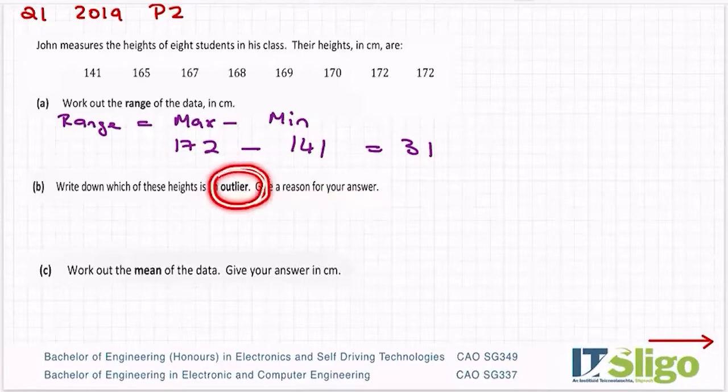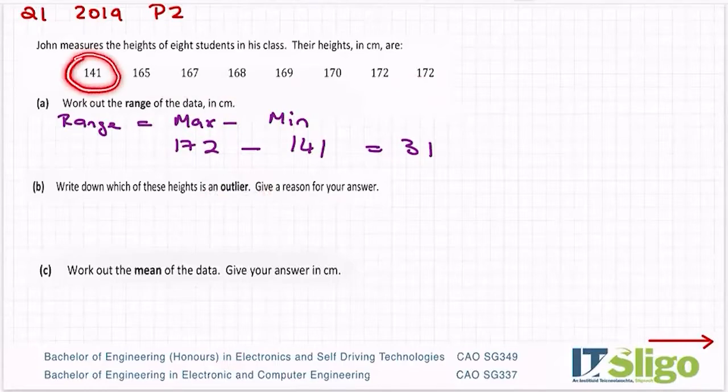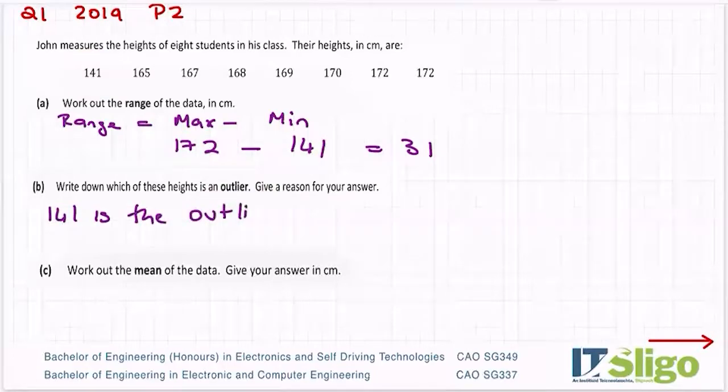So an outlier is a piece of data that is different to the normal trend of the other data. It's the one that's different to the rest. So I would argue that 141 is the outlier. Why?